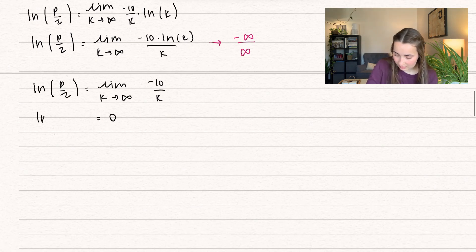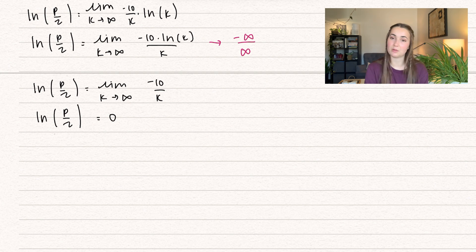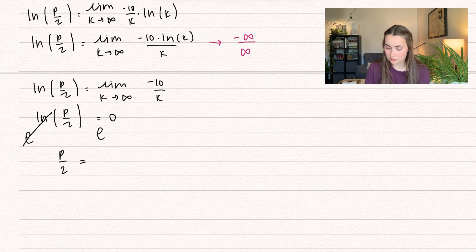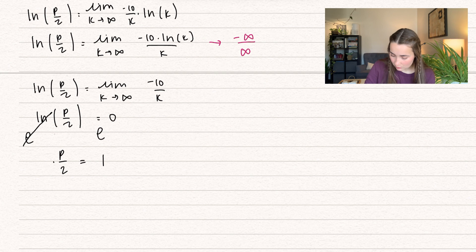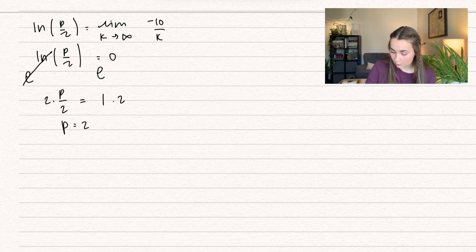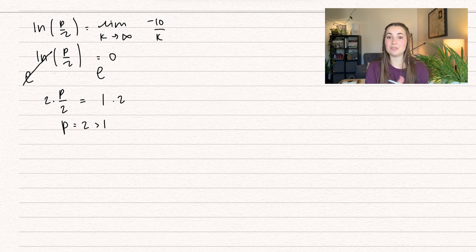So we have ln(p/2) equals 0. Raising both sides to e, the natural log cancels and we get p over 2 equals e to the 0, which equals 1. Multiplying both sides by 2 gives p equals 2. Since p equals 2, which is greater than 1, by the root test the series is going to diverge.